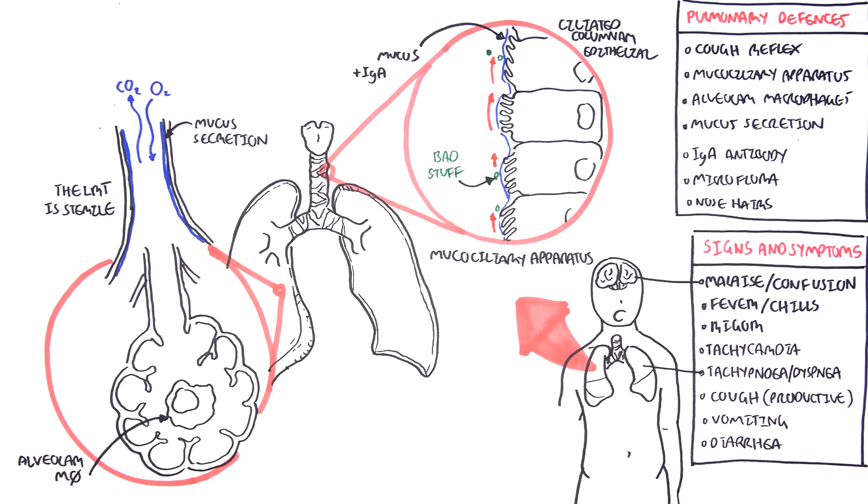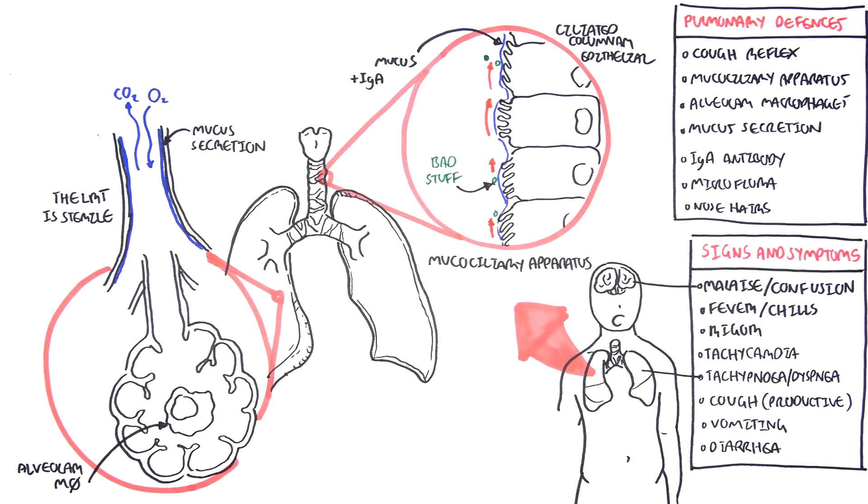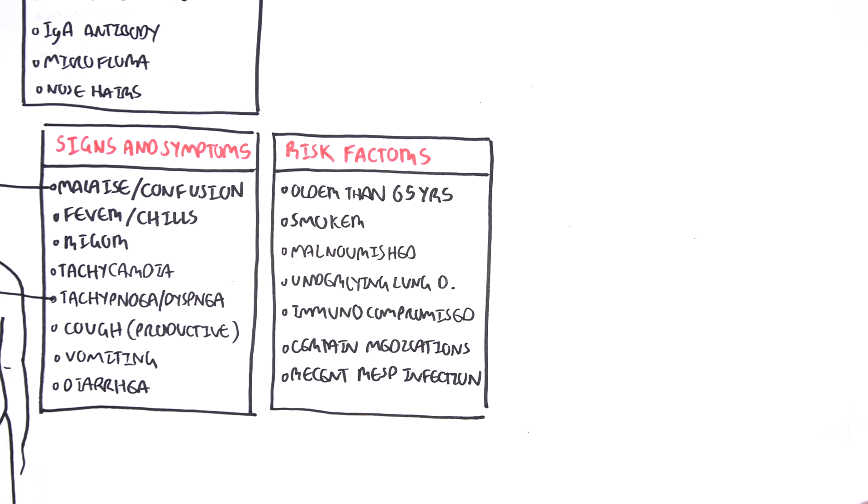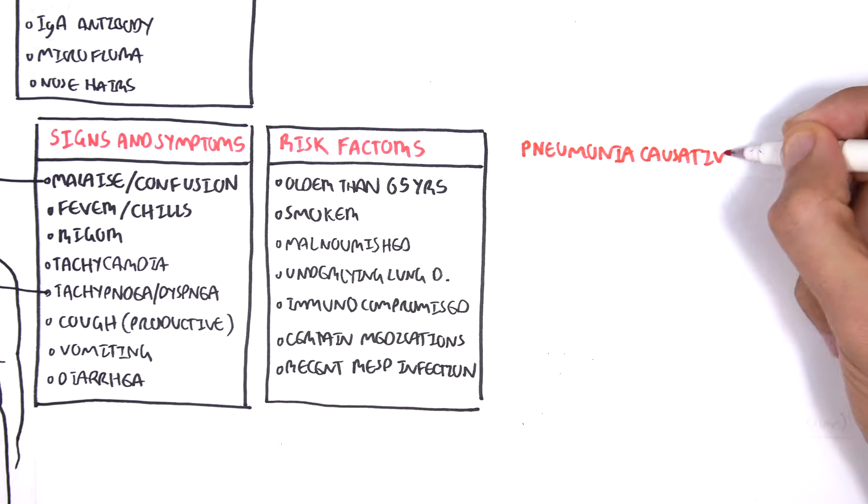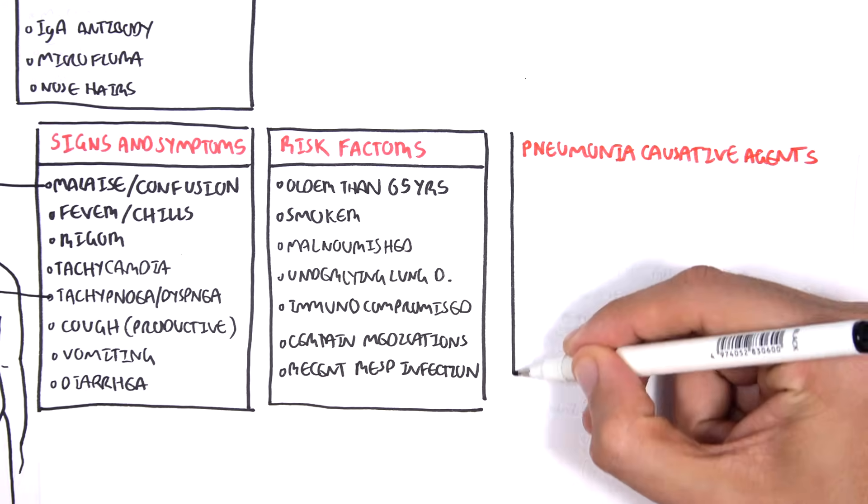So these pulmonary defenses help us fight off microorganisms, bad ones, every day. Yes, we do have microorganisms living within our respiratory tract, but these guys are commensals. They do no harm unless you are immunocompromised or unless they just grow wild out of control. Regardless, the lung defenses help protect us. Problems or deficiency in these defenses can make people more susceptible to lung infection such as pneumonia.